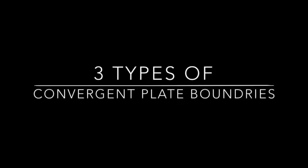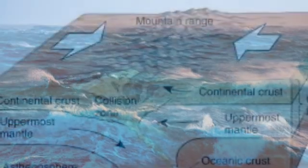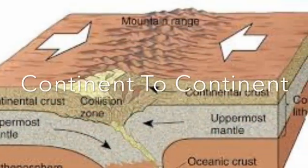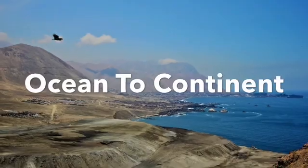Convergent plate boundaries are when two plates converge. The result depends on the type of lithosphere — in other words, it's when two plates move towards each other. There are three types of convergent plate boundaries: ocean to ocean, continent to continent, and ocean to continent.